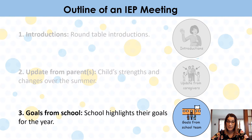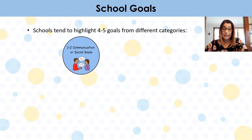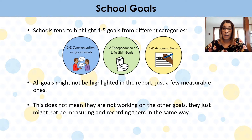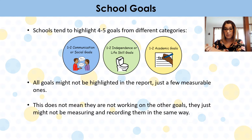Typically the last piece of an IEP or IIP meeting is for the school to share some of their goals with you. School tends to highlight four, five, or maybe six goals from different categories — typically one or two communication or social goals, maybe one or two independence or life skill goals, and maybe one or two academic goals. You have to realize that not all the goals you'd expect school to be working on will be highlighted in the report — it doesn't mean they're not working on them, they just might not be measuring them in the same way.